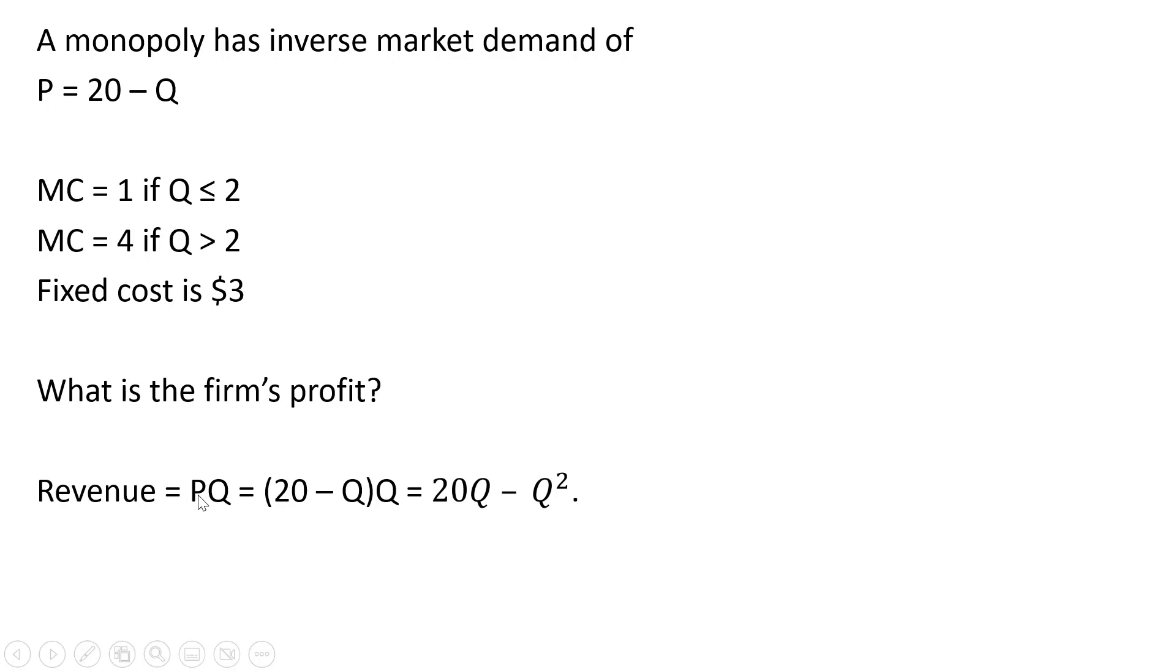First, we're going to get the firm's revenue, which is price times quantity. Price is this 20 minus Q, and that's all multiplied by Q. So distributing the Q here, we get 20Q minus Q squared.